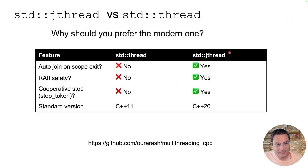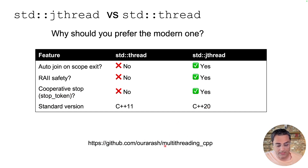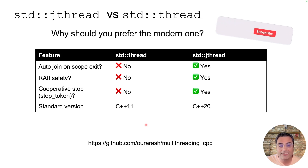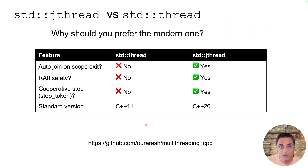Here's a summary and comparison of std::jthread versus std::thread. std::jthread provides auto-join on scope exit, RAII safety, and cooperative stop with stop_token in a very convenient way — and it's available in C++20. I've put all the examples from this video in a repo, so please feel free to download and experiment. Thank you everyone for watching. If you found it useful, please give it a like, share it with your friends, and subscribe to my channel so you get notified as soon as I release a new video. Thank you, and I'll see you next time.